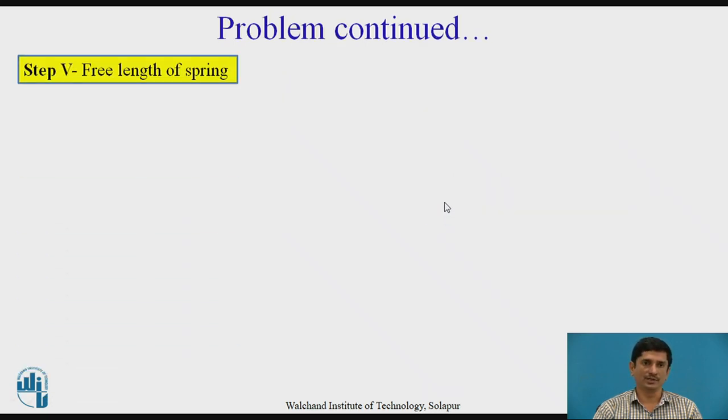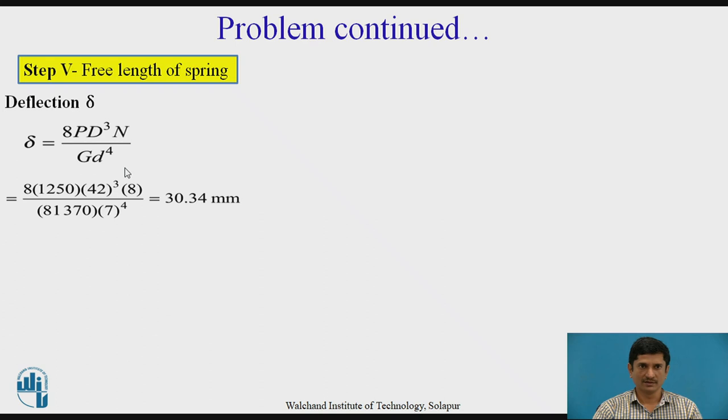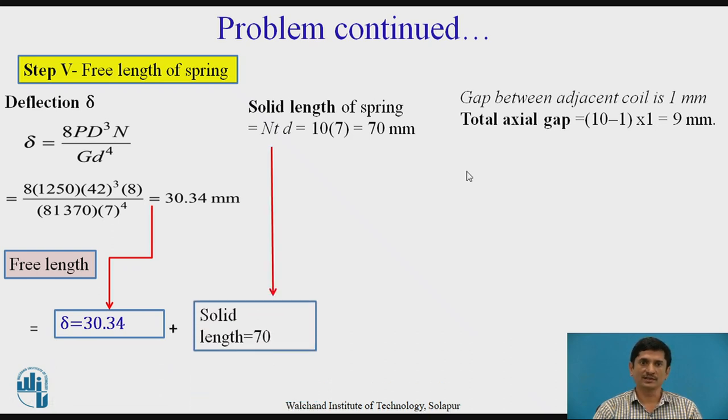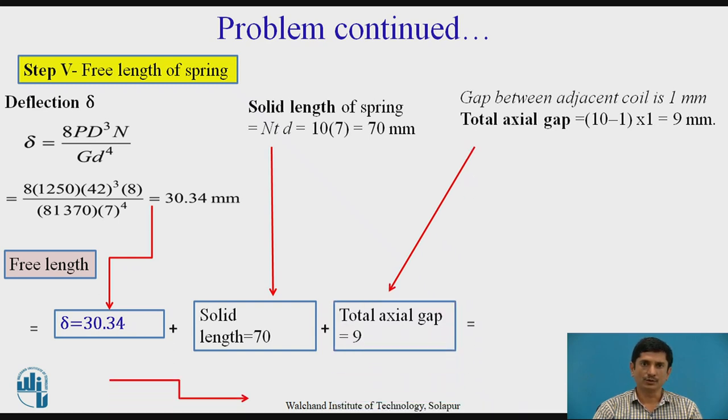Now, I need to get the free length of the spring. It is a combination of different lengths. Let us calculate these lengths. Deflection delta is given by the classical equation. We need to put the actual value of number of turns, active turns, which was the fraction 7.91, but we take it as 8. Solid length of the spring is NT times D. The gap between adjacent coil is 1 millimeter. Therefore, total axial gap is (10-1) times 1 equals 9. If I take the free length of the spring, it is equal to the deflection plus solid length plus the total axial gap. The total length of spring comes out to be 109, we approximate it to 110 millimeter.